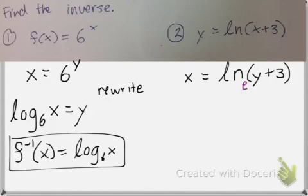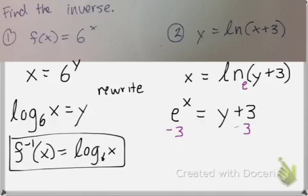So e to the power of x equals y plus 3. Now I'm not quite done solving for y. I need to subtract 3 from both sides. So I get y equals e to the power of x minus 3. And then you would just write it in proper inverse notation since you have solved for y.